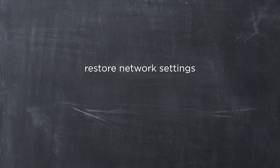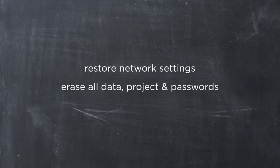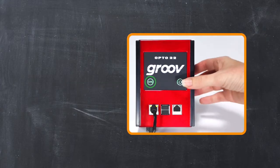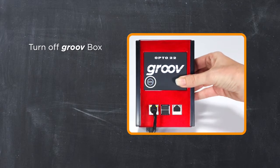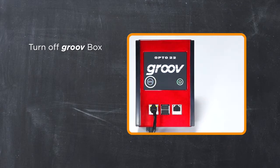This process will restore network settings and erase all data including your projects and passwords. First, turn off the GrooveBox by pressing the power button briefly. Make sure it's still plugged in and receiving power.